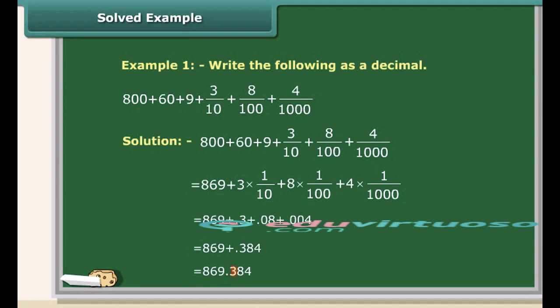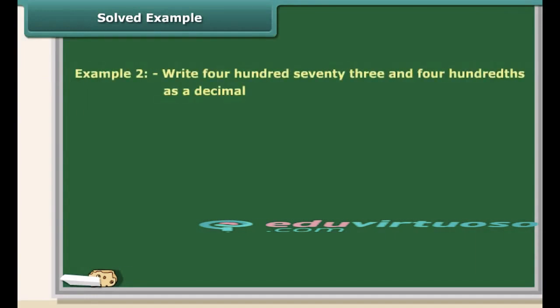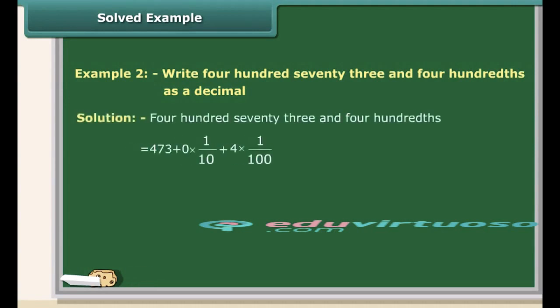So the answer is 869.384. Let us solve one more question. Write 473 and 4 hundredths as a decimal. In this number, 473 is the whole part. The decimal part is 4 hundredths, which can be written as 0.04. So the number is 473.04.